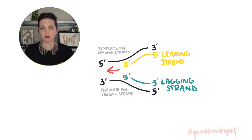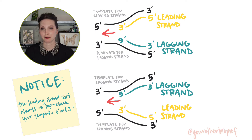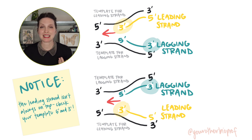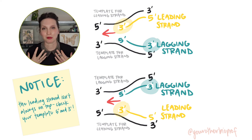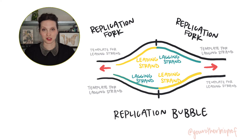So each replication fork will have one leading strand and one lagging strand. Which is which depends on the orientation and directionality of the template strands. The leading strand will be oriented five prime to three prime into the fork — its three prime end will be into the fork and it can be synthesized continuously. Whereas the lagging strand will have its three prime end facing away from the fork and will be synthesized discontinuously in Okazaki fragments that are joined together to make one strand. Remember that a replication fork is just one half of a replication bubble, so in the bubble we'll have two leading strands and two lagging strands, with DNA synthesis occurring bidirectionally.